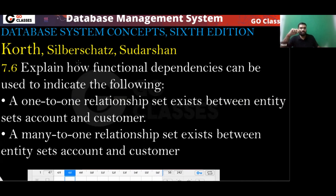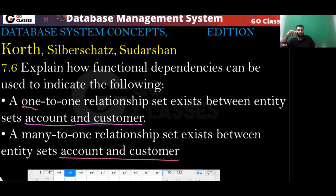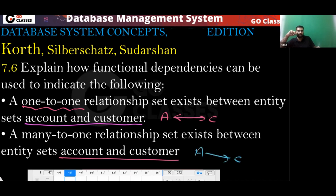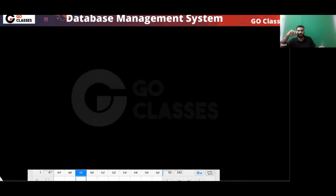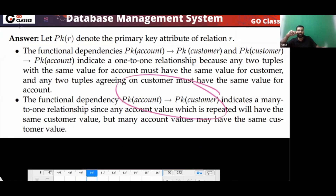Now the next question from the same textbook: a one-to-one relationship exists between account and customer — so account determines customer and customer determines account. For many-to-one between account and customer: one customer can have many accounts, so if you know the account you can tell the customer, but if you know the customer you cannot tell the account. Therefore, account determines customer.